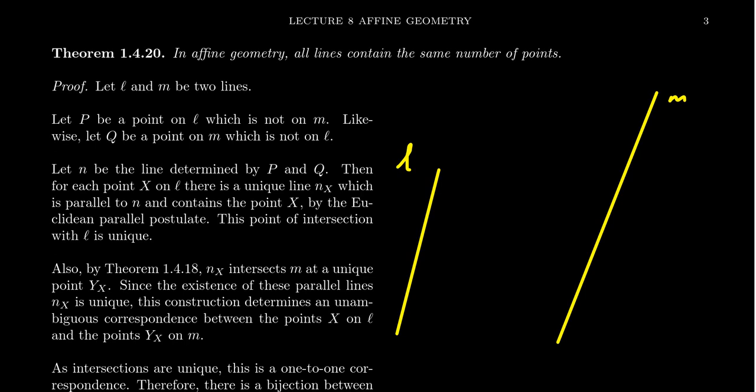So how are we going to do this? We take a starting point: the line L has some point on it, which we'll call P. It doesn't matter which point you choose, but by secancy we know it has at least one. Likewise there has to be a point on M. I should also mention that this point P is not on M.